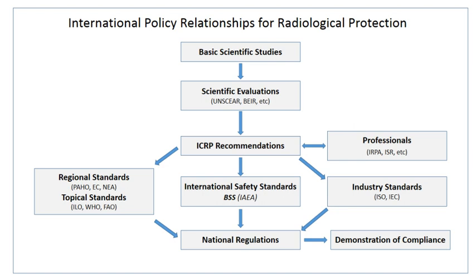Ionizing radiation is widely used in industry and medicine, and can present a significant health hazard by causing microscopic damage to living tissue. There are two main categories of ionizing radiation health effects. At high exposures, it can cause 'tissue' effects, also called 'deterministic' effects due to the certainty of them happening, conventionally indicated by the unit gray and resulting in acute radiation syndrome. For low-level exposures there can be statistically elevated risks of radiation-induced cancer, called 'stochastic effects,' due to the uncertainty of them happening, conventionally indicated by the unit sievert.